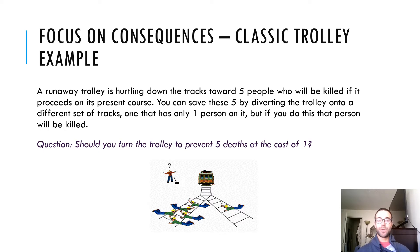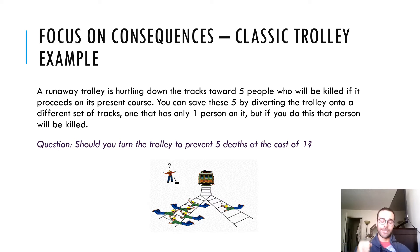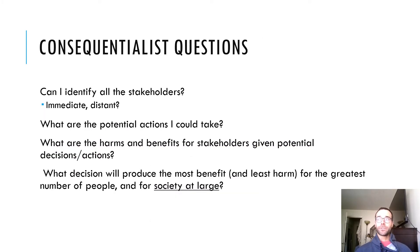Typically most people say they're going to flip the switch and divert the train. The justification is that five lives are more important than one life. Obviously part of this example is that we don't know who these people are, so we want to take the best odds and assume the greatest good for the greatest number. If you pull that switch and divert the train, you were acting like a utilitarian — the guiding principle is greatest good for the greatest number.